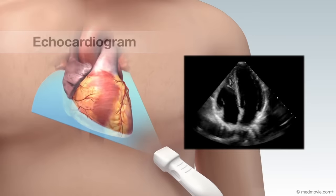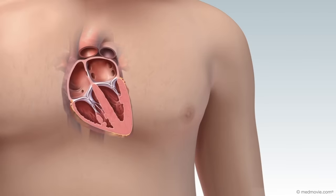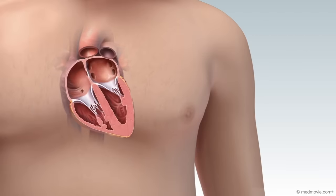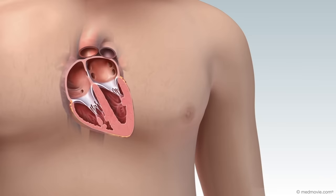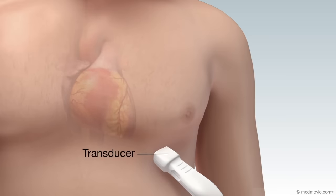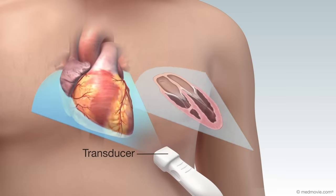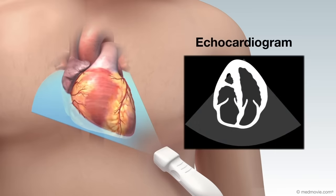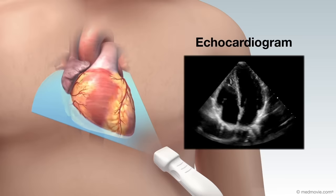An echocardiogram, or cardiac ultrasound, is a diagnostic test that uses sound waves to view structures of the beating heart, such as the chambers or valves. A device called a transducer is placed on the chest wall, and sound waves are transformed into images and video which are used to evaluate your heart's function and visualize structural details.